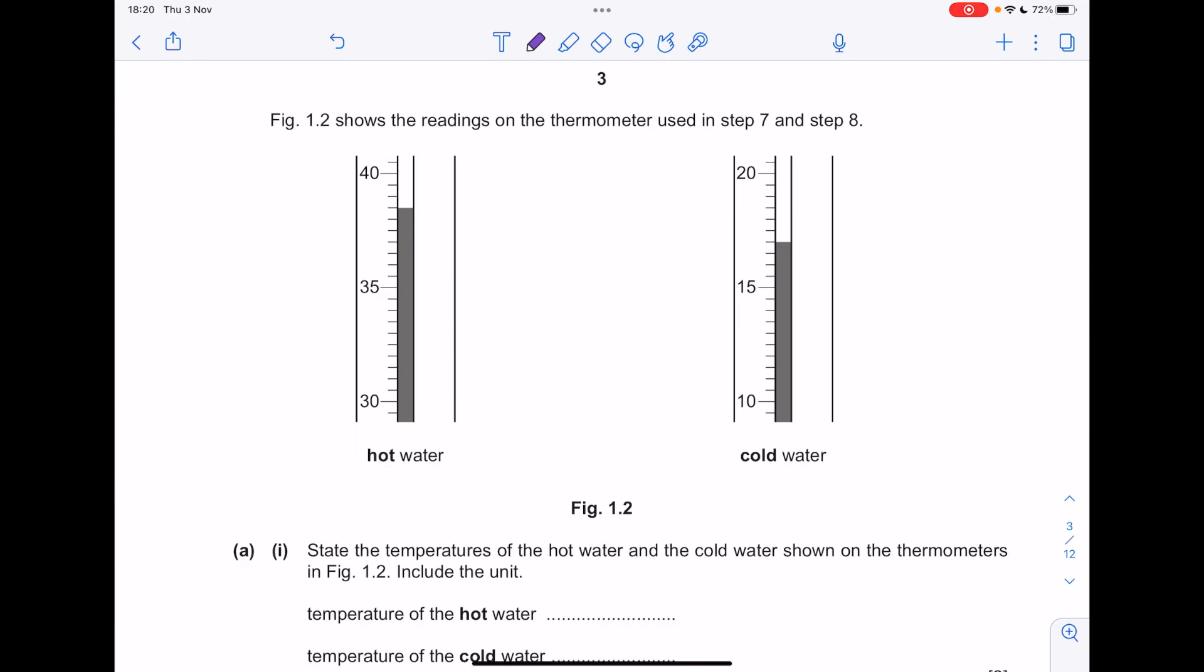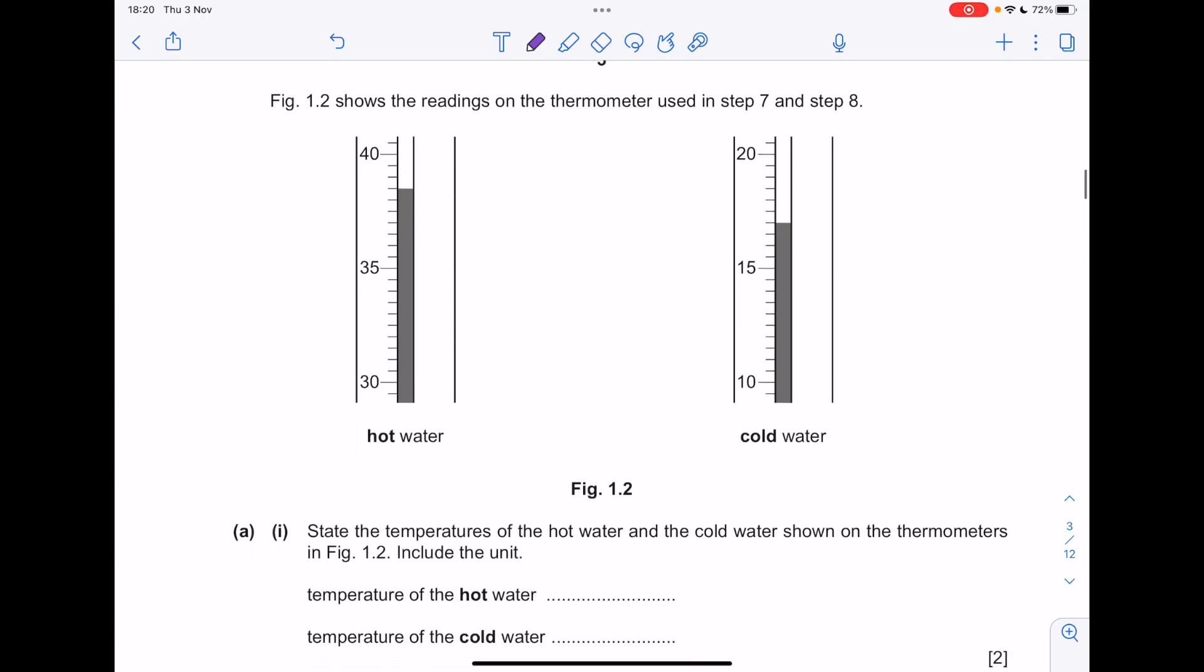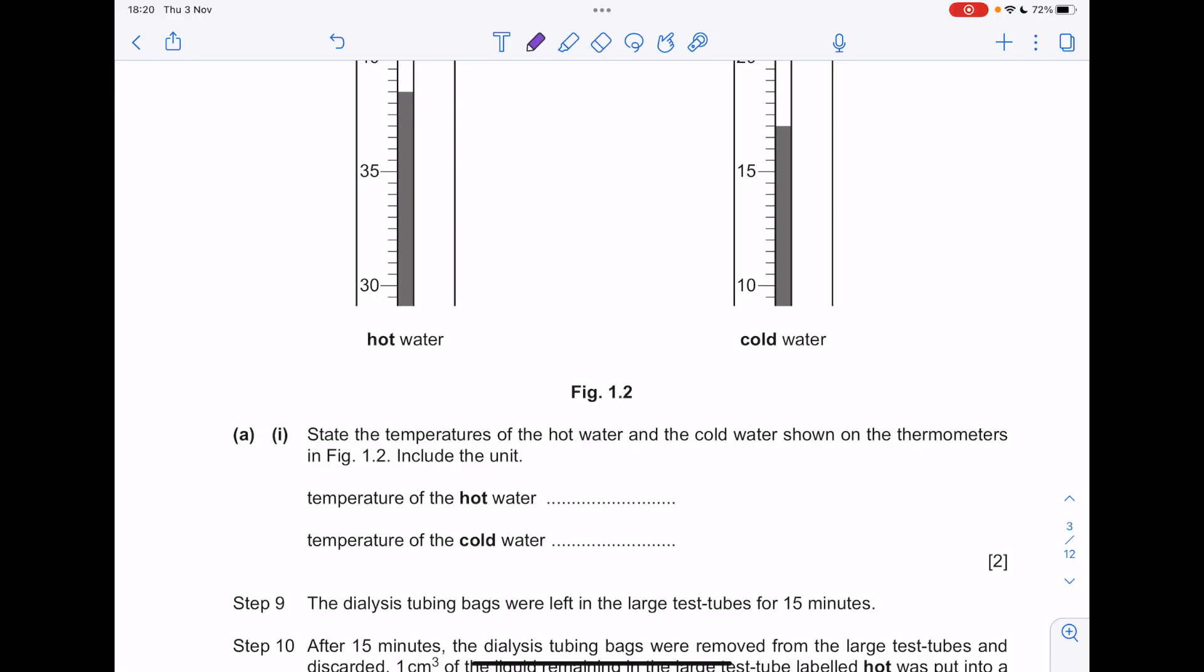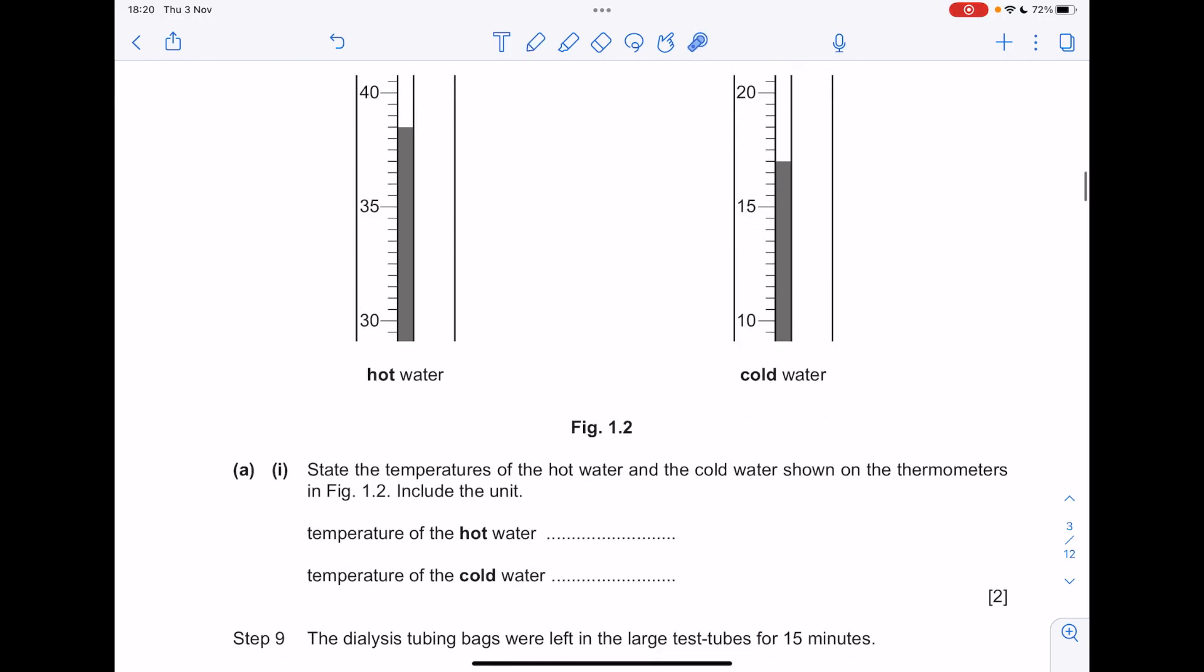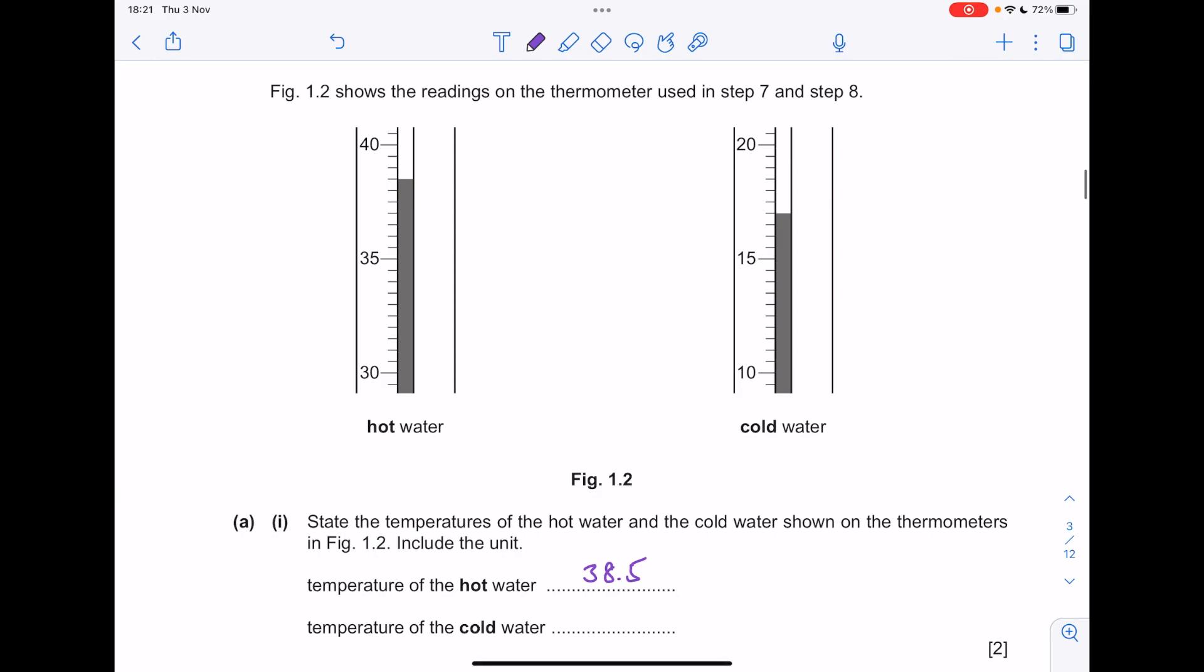Figure 1.2 shows the readings on the thermometer. State the temperatures of the hot water and cold water. Make sure you read this nice and accurately. It goes from 35, 36, 37, 38, so that's 38.5. What about cold water? 15, 16, 17 degrees.